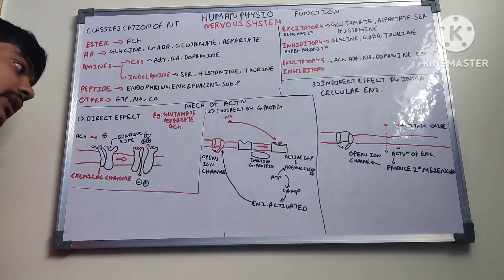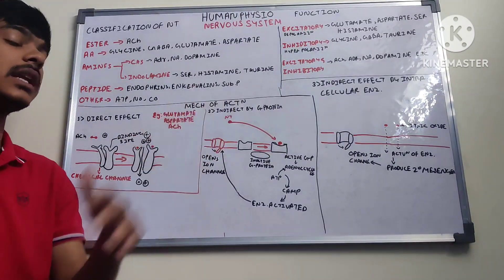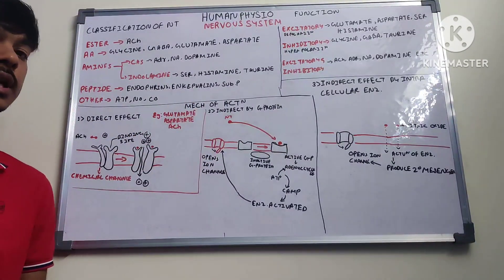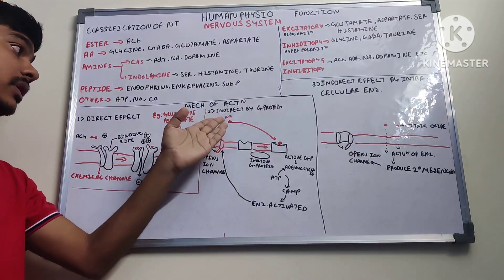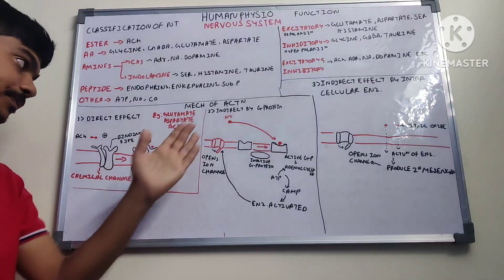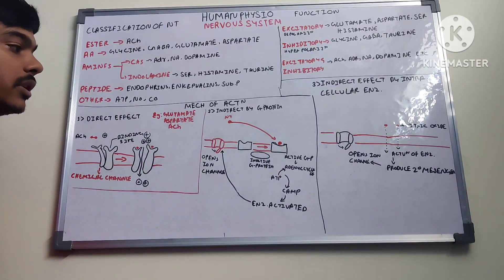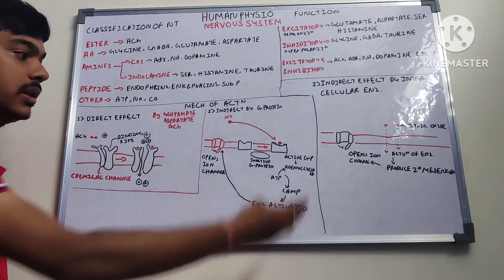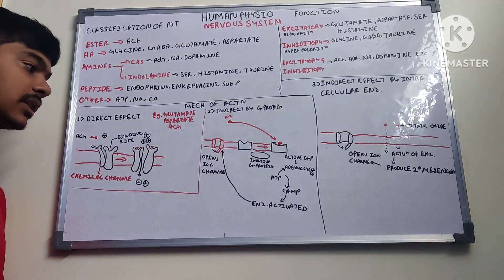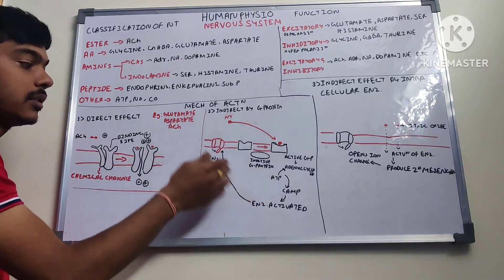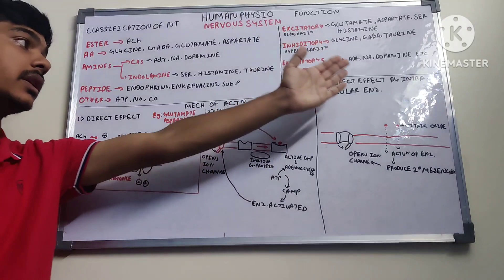The second mechanism is indirect via G protein. The neurotransmitter binds to a specific site and activates a G protein, which activates adenylyl cyclase. Along with ATP, cyclic AMP is synthesized, an enzyme is activated, and this leads to the opening of the ion channel. Neurotransmitters such as GABA, histamine, substance P, noradrenaline, and dopamine act through G protein coupled reactions.